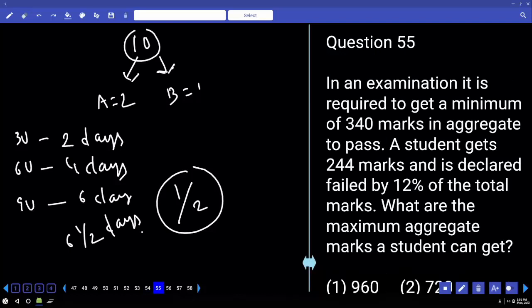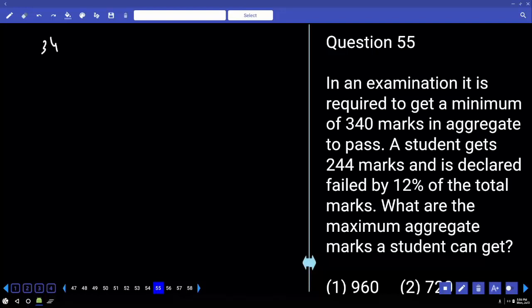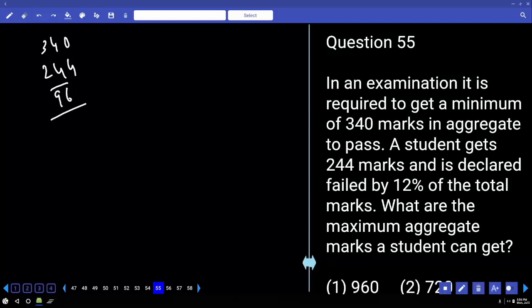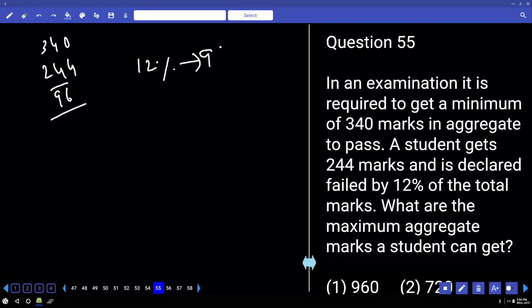55. In an examination, it is required to get a minimum of 340 marks in aggregate to pass. A student gets 244 marks and is declared failed by 12% of the total marks. What are the maximum aggregate marks a student can get? Right. What is the difference between 340 and 244? 96. This 96 is nothing but 12%. If 12% is 96, then 1% is 8. 100% is 800. So, maximum aggregate marks for that exam is 800.